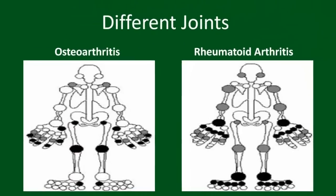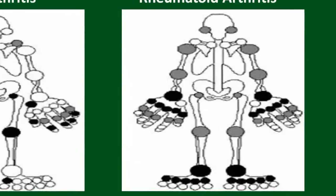On the other hand, rheumatoid arthritis can cause pain and swelling to nearly any joint, with typical joints being the proximal joints in the hand, wrists and toes, in addition to all the other joints highlighted in grey.